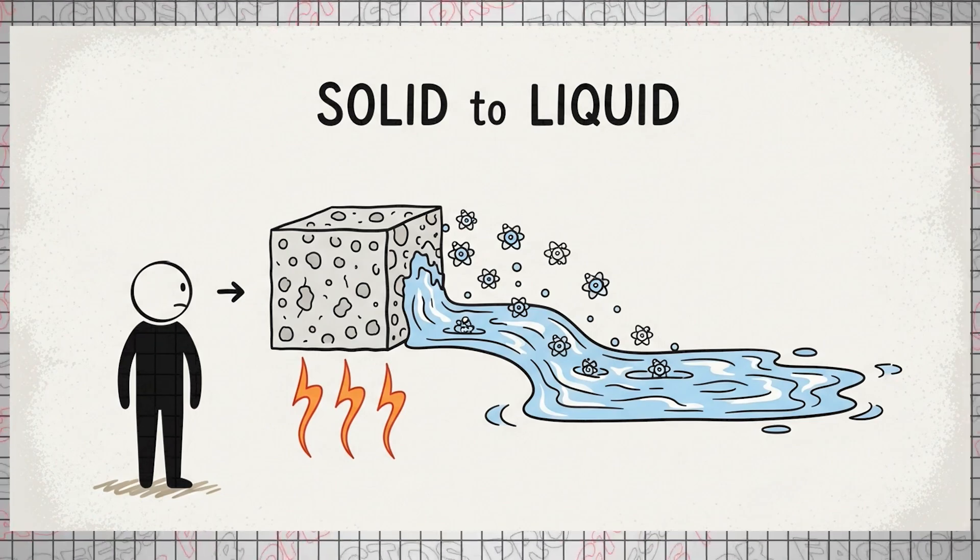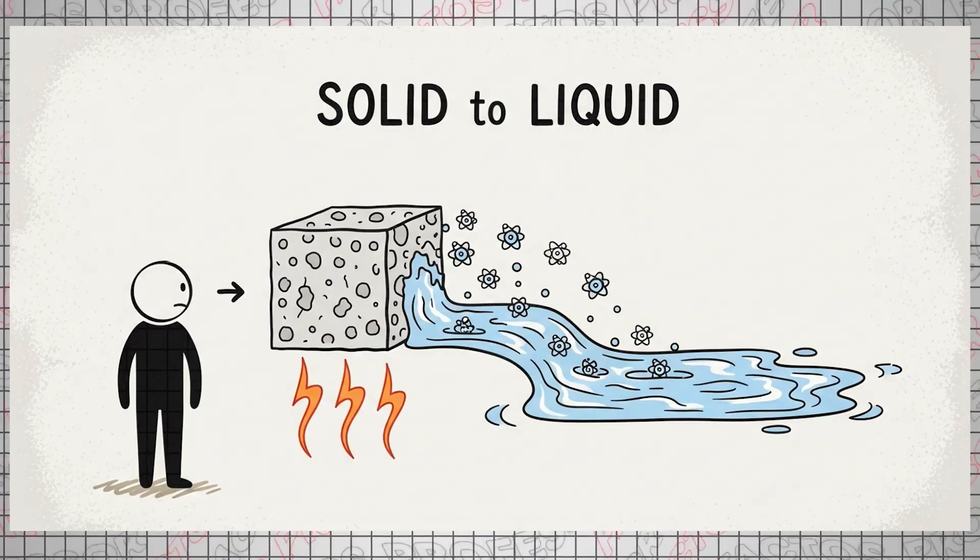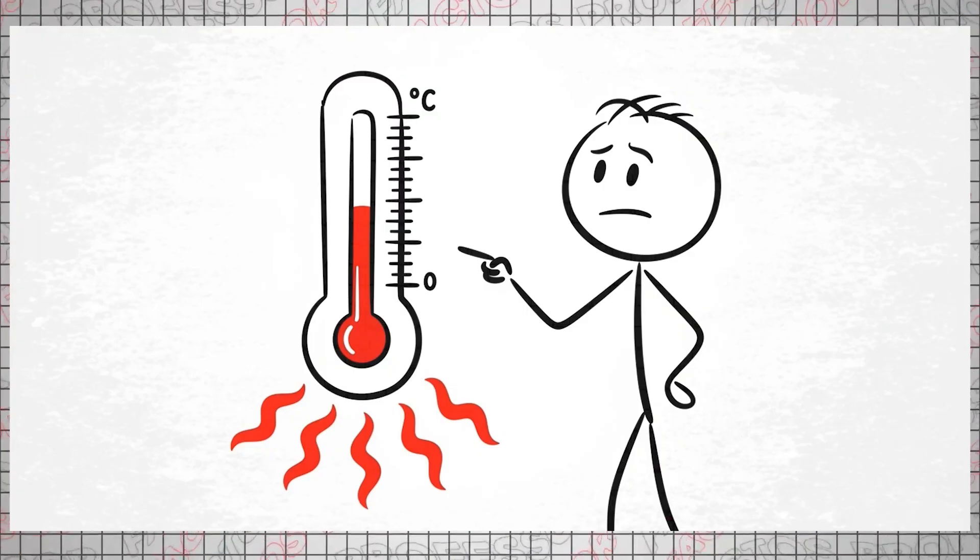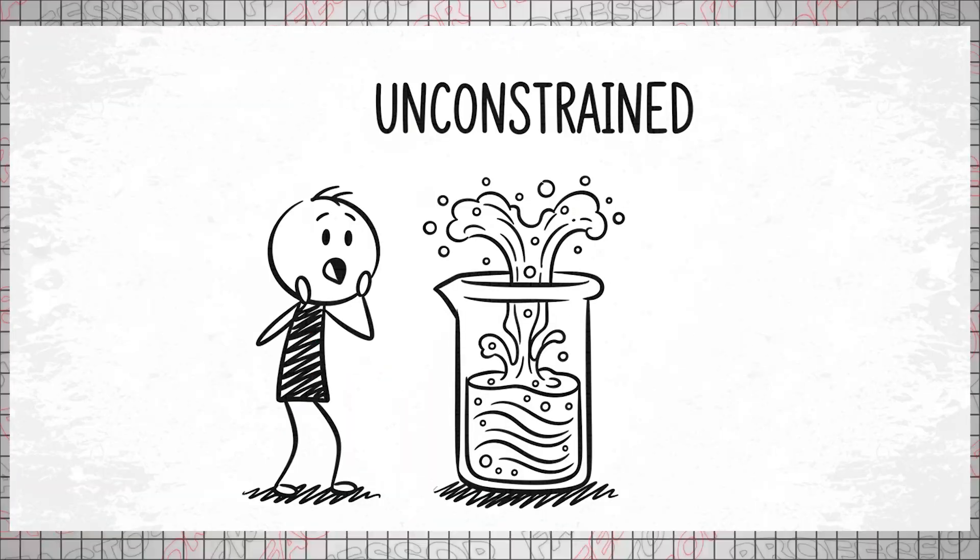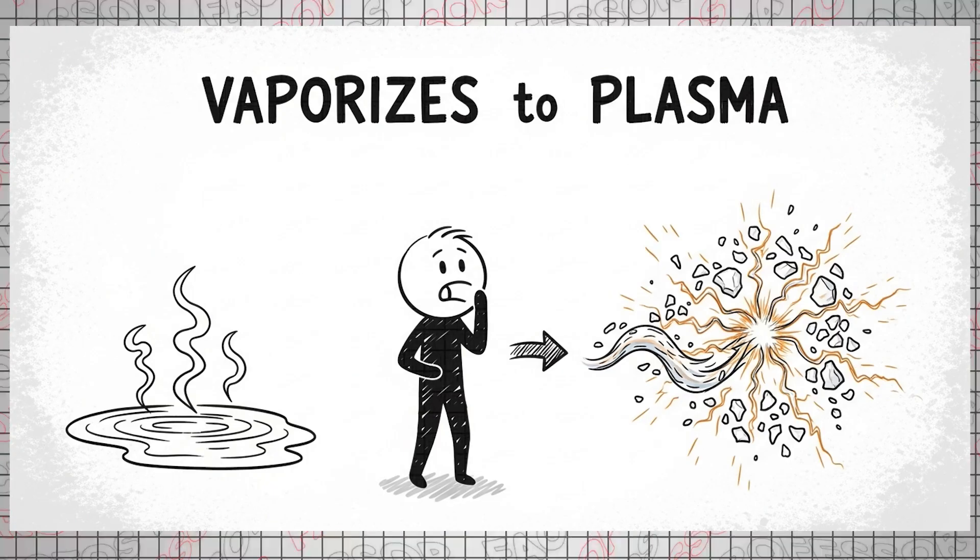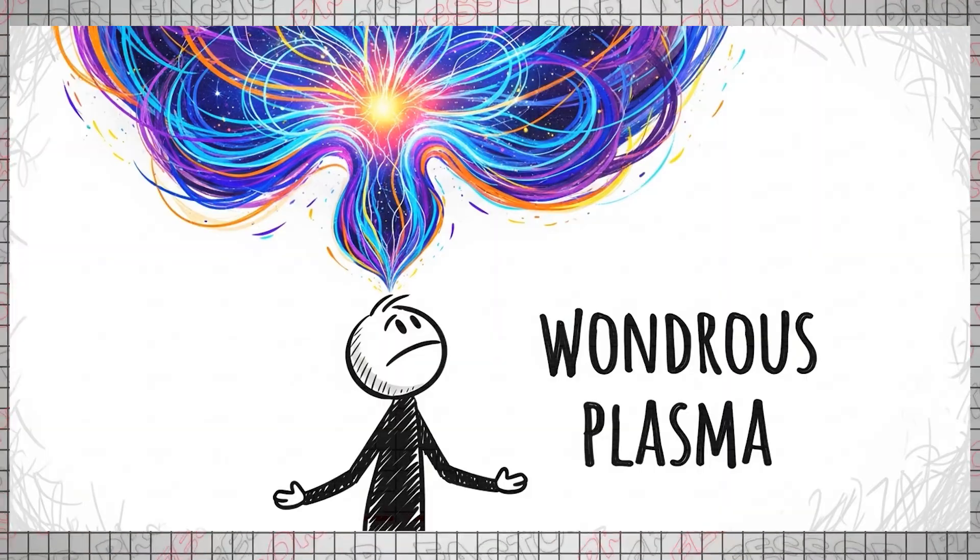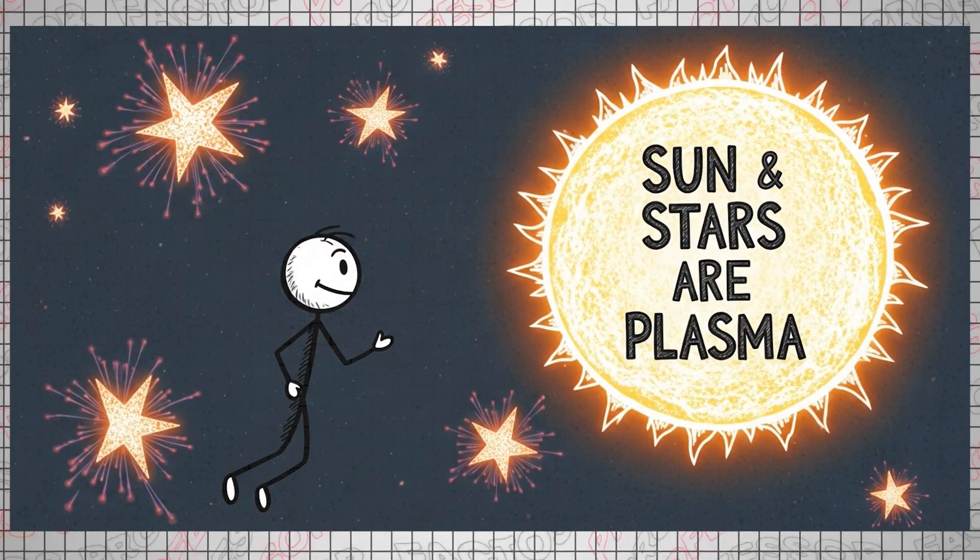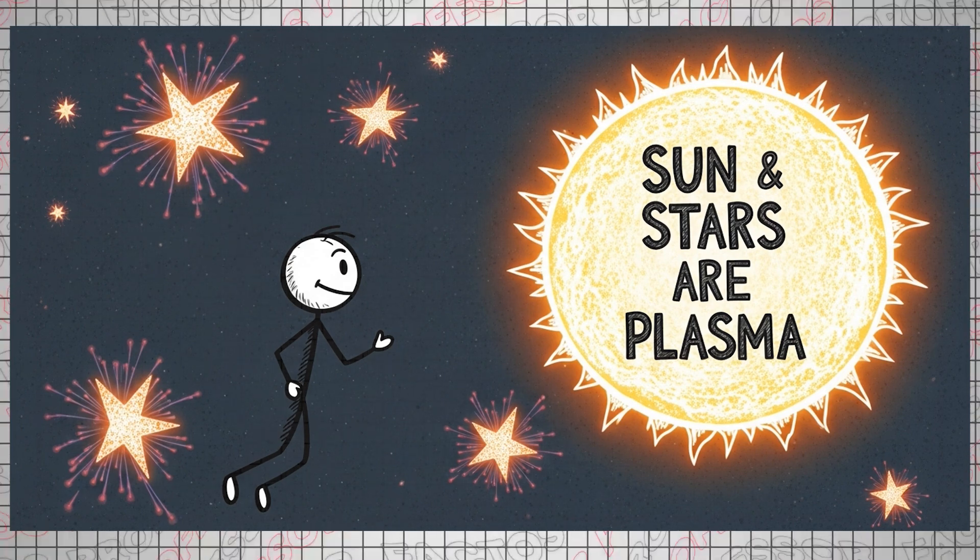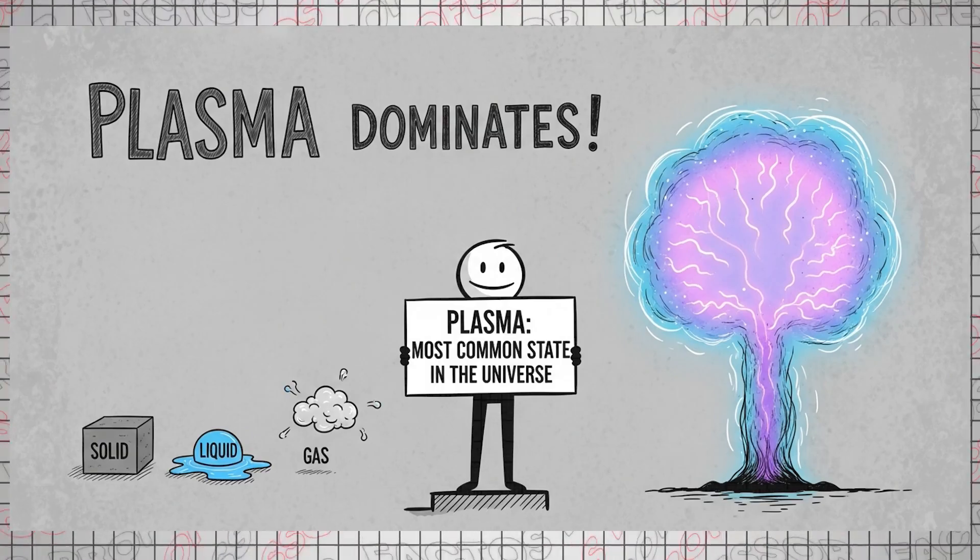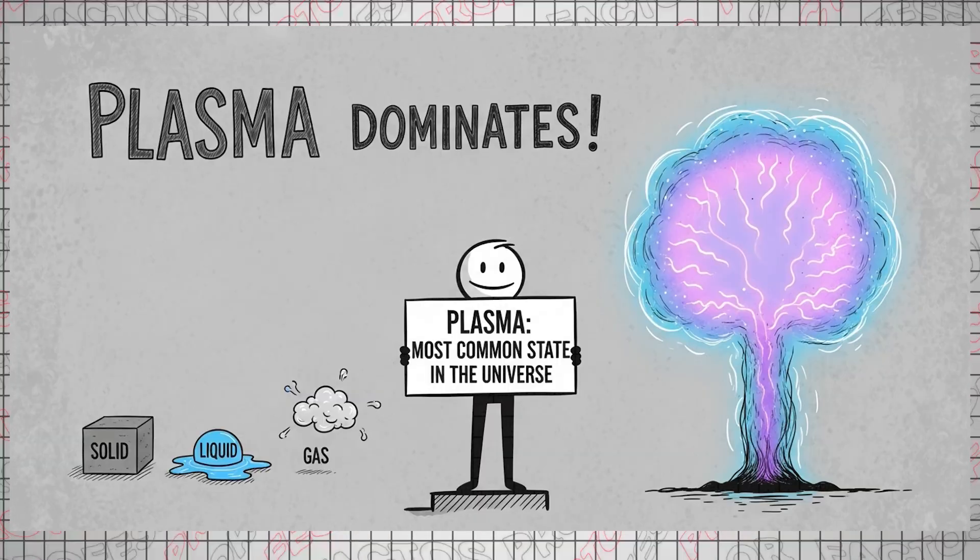While we can't explain why absolute zero is what it is, we do know what happens to matter as it approaches this limit. As temperature rises, atoms accelerate, breaking apart and floating freely, transforming solids into liquids. This process continues with further temperature increases: matter becomes so unconstrained that even in its liquid state, it expands and vaporizes, then can even turn into plasma, a bizarre yet equally wondrous state of matter.